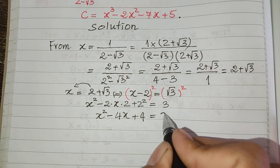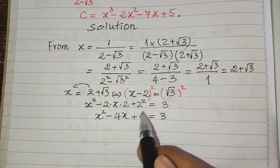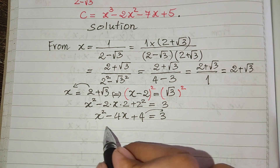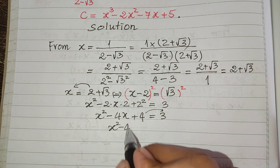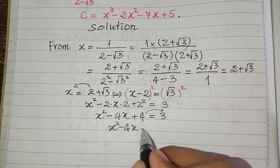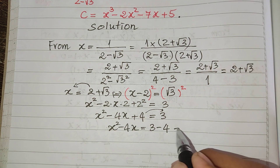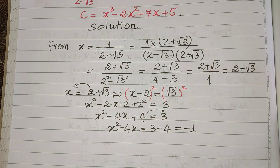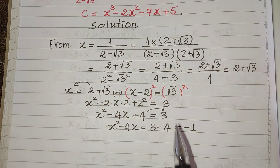Now I move 4 from the left-hand side to the right-hand side. So we get h squared minus 4h equals 3 minus 4, which equals minus 1. Now we use this to find the value of the C expression.